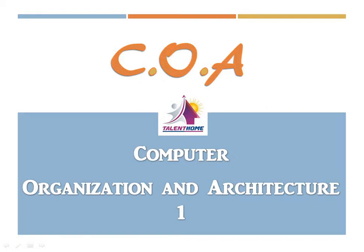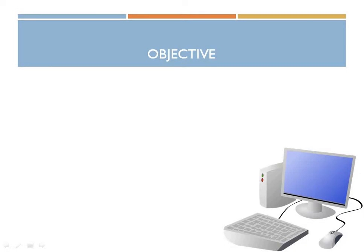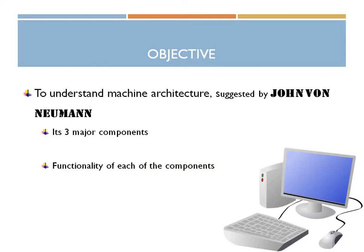Starting with the very first session, we are going to see the architecture of the Von Neumann machine. This is the major architecture that we use nowadays and one of the most stable ones used so far. The objective of this session will be to understand machine architecture as suggested by John Von Neumann. We are going to see the three major components, the functionality of each component, and the various interconnections between them.